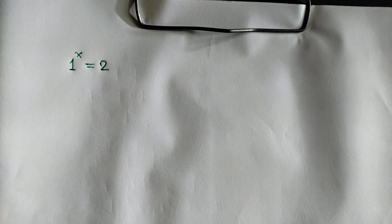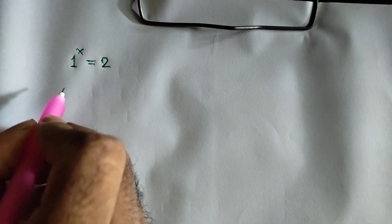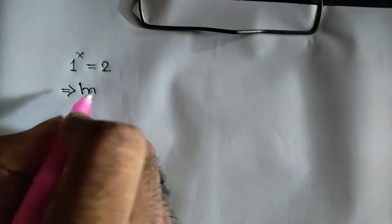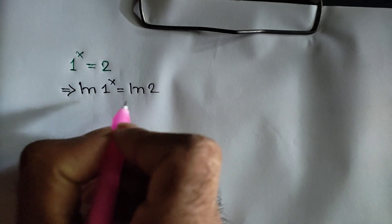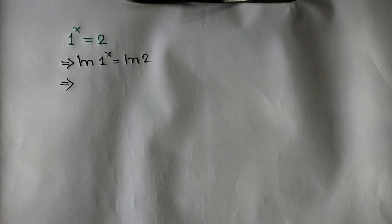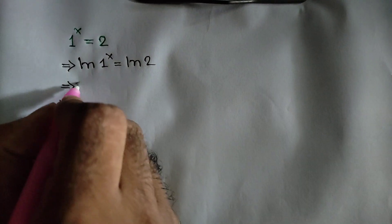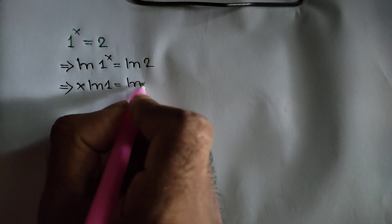Hi everyone. In this video I am going to show how to solve this equation: 1 to the power x is equal to 2. Taking ln of both sides, we can write ln of 1 to the power x is equal to ln of 2. According to the law of logarithms, we can write this as x times ln of 1 is equal to ln of 2.